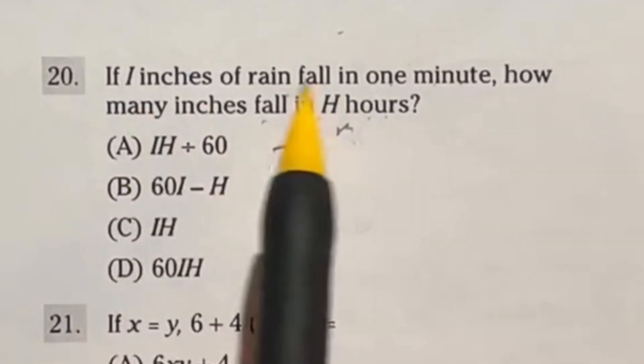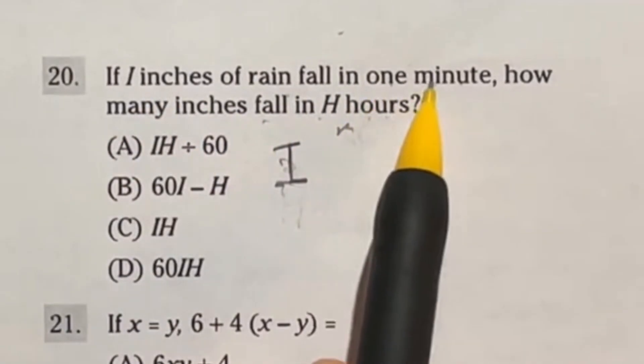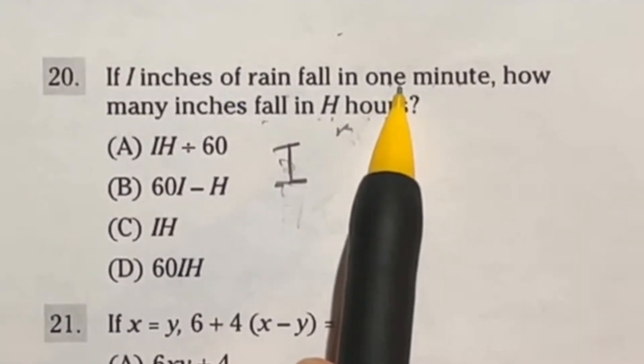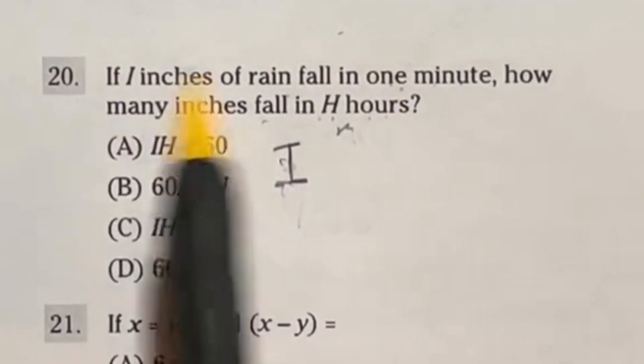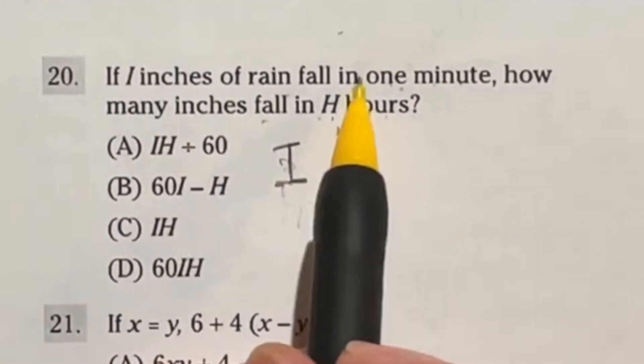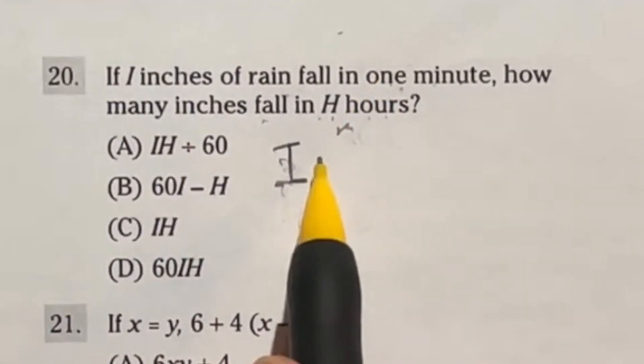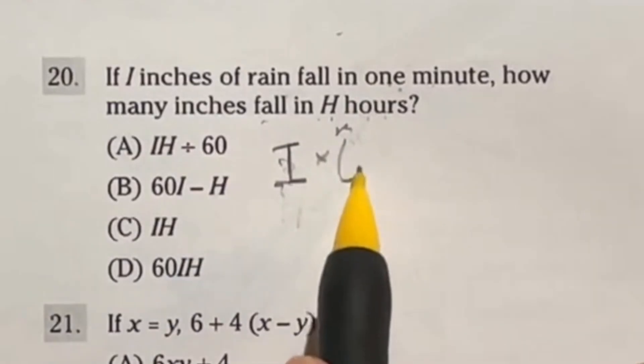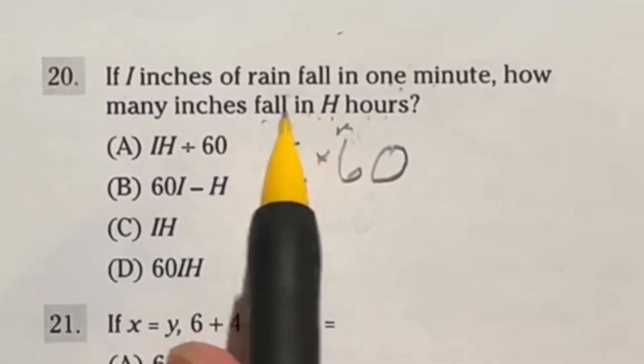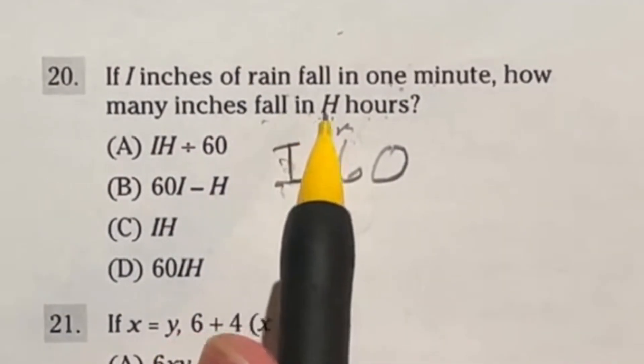Now let's talk about this. It says how many inches fall in h hours? Well, if i are falling every minute, and I know that there are 60 minutes in an hour, then that means that I can just go ahead and multiply whatever this answer was—the i times one minute, which is just i—I can multiply that by 60, times 60. And that's going to tell me how many I get in an hour, just one hour.